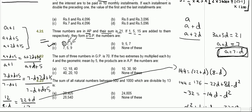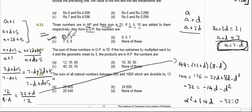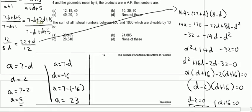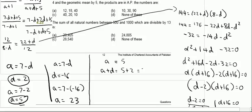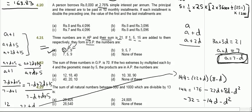If a is 5 and d is 2, then the first term is 5, a plus d is 5 plus 2 which is 7, and a plus 2d is 5 plus 4 which is 9. So our three numbers are 5, 7, and 9 — answer 4.21 A.